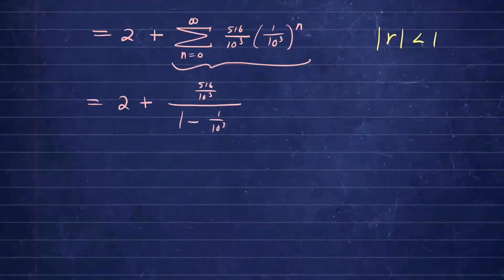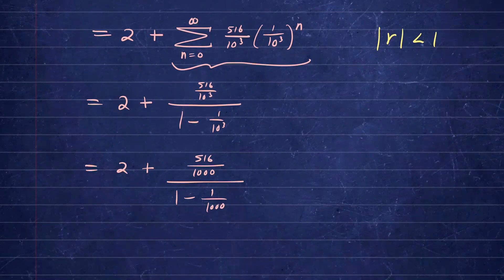And then we just simplify this. So we have 2 plus 516 over 1,000 over 1 minus 1 over 1,000. And then I can write 1 as 1,000 over 1,000 minus 1. So that's going to give us 999 over 1,000.